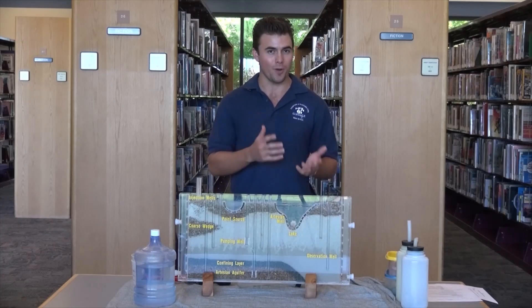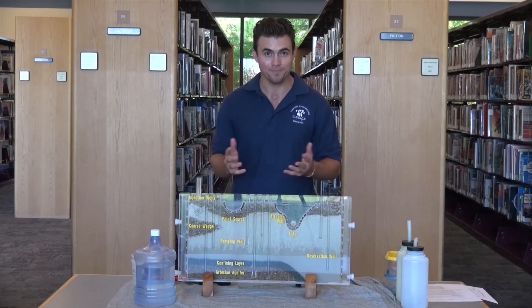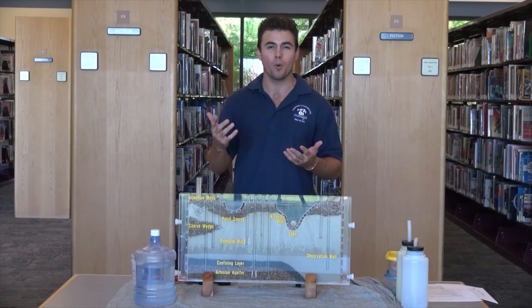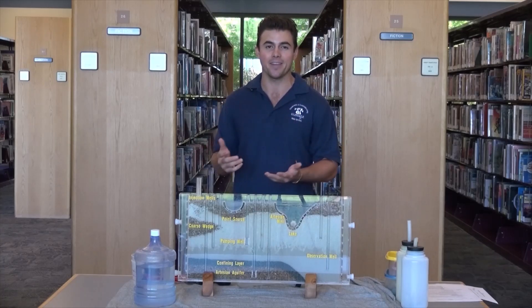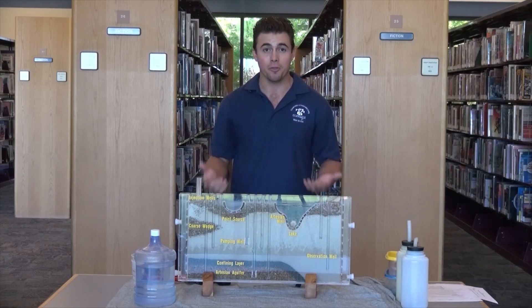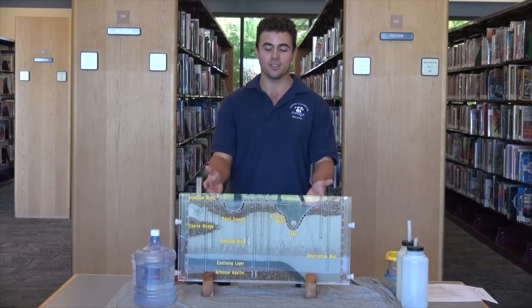If you remember from our porosity experiment — which is a spoiler if you haven't watched it — the gravel had much larger pore space. It was much more porous; it had higher porosity than the sand, therefore the water could flow much easier through it. And that is one of the many concepts that goes on in this groundwater flow model.